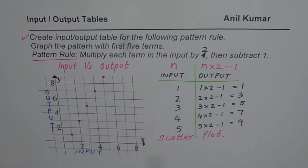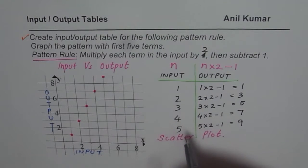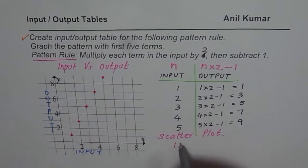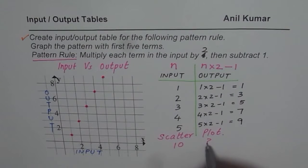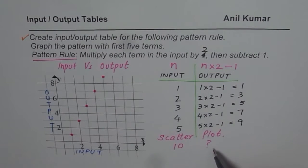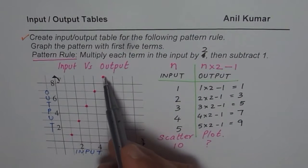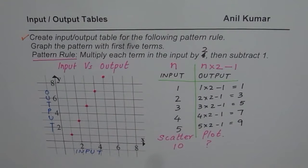So as an exercise, what you can do now is you can find what will be the output for the 10th term. You could answer the question, why we have not connected these points with a straight solid line. And third, what type of pattern do you see? It looks like a linear pattern. It increases by 2 each time. I hope these questions help you to understand. Thank you and all the best.